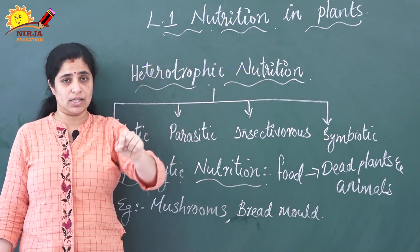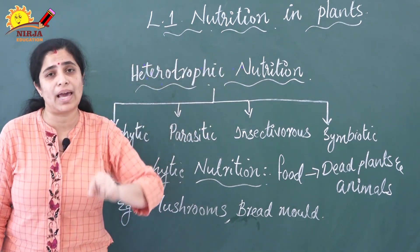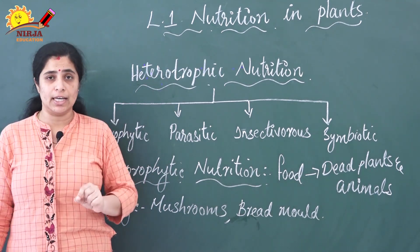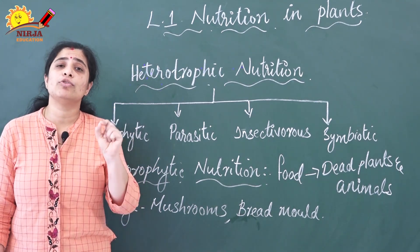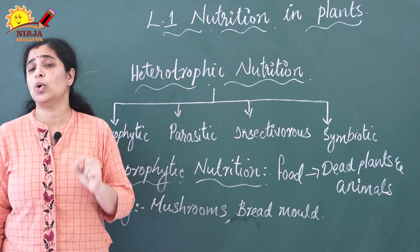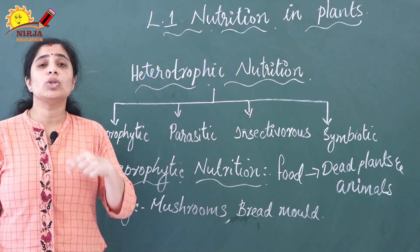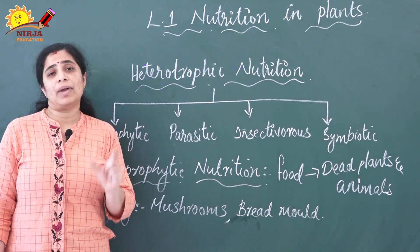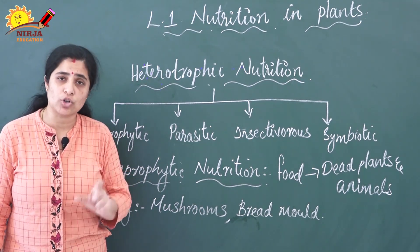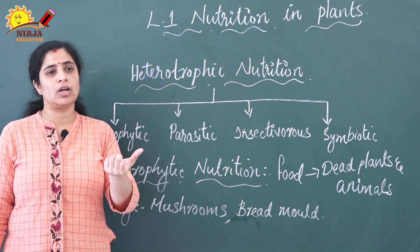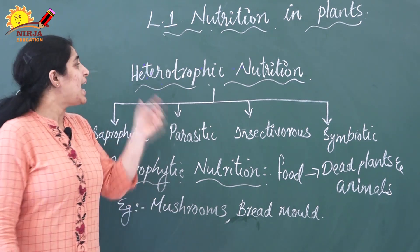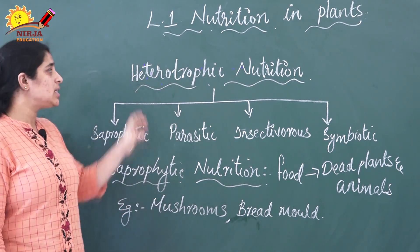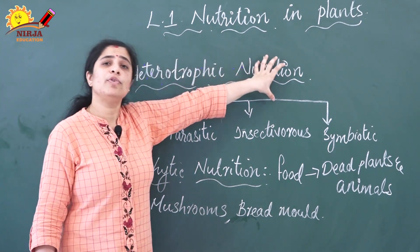To repeat: non-green plants and other living organisms such as human beings and animals can't prepare food by themselves because they lack chlorophyll. So they depend on other plants for food. Such organisms are known as heterotrophs and this is known as heterotrophic mode of nutrition.